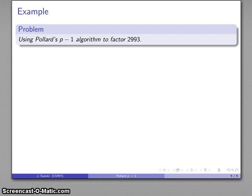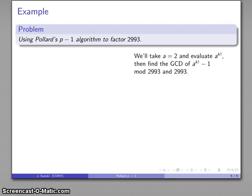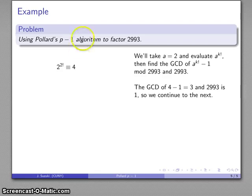Let's take another example using Pollard's p-minus-1 algorithm to factor 2993. We'll take a equals 2 and evaluate a to the k factorial. We take a equals 2 and evaluate 2 to the k factorial, then find the GCD of a to the k minus 1 mod 2993 and 2993. The GCD of 64 minus 1 equals 63 and 2993 is 1, so we continue.